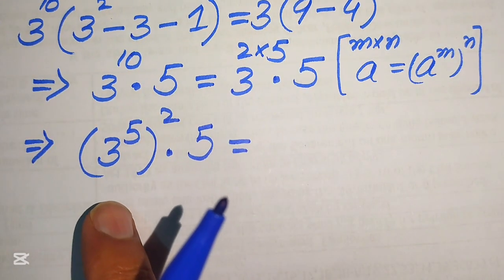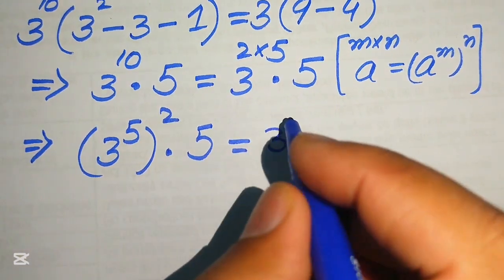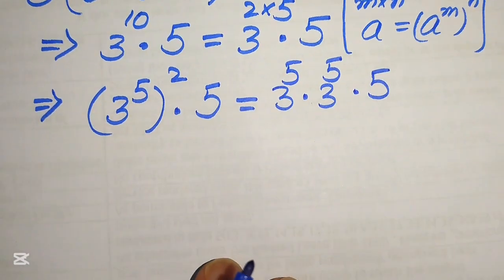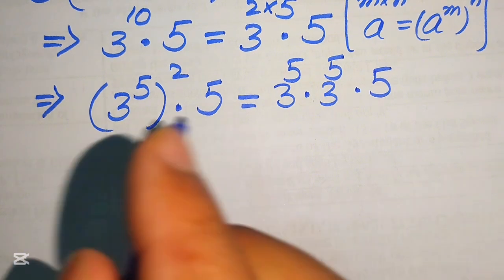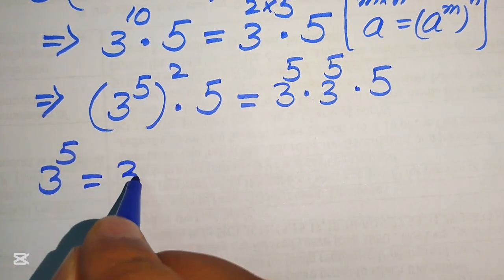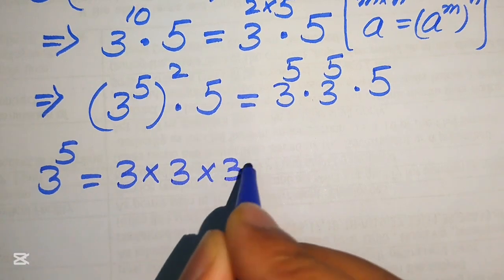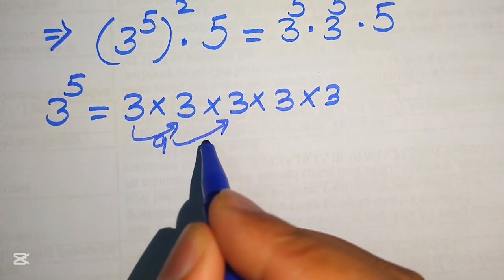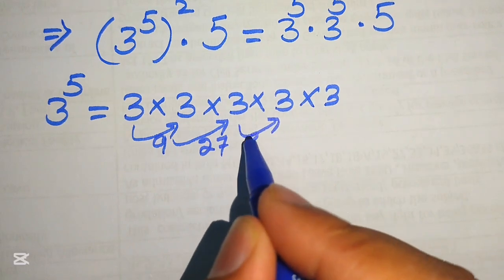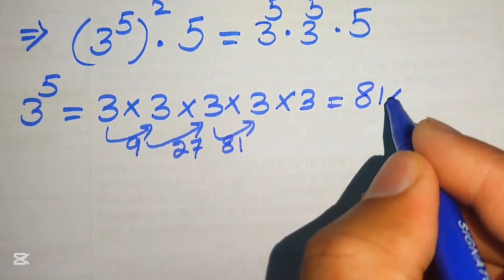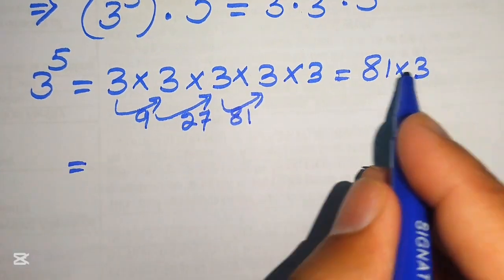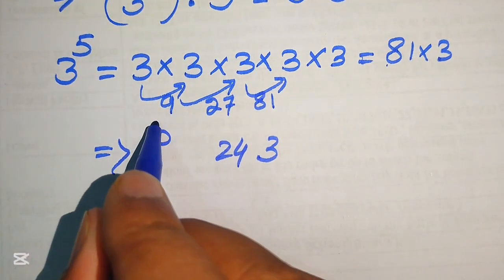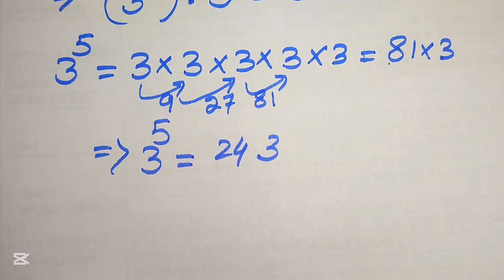The meaning of 3 to the power of 5 squared is that we multiply 3 to the power of 5 by itself, and then multiply by 5. Our next target is to find the value of 3 to the power of 5. Multiplying 3 five times: 3 times 3 is 9, times 3 is 27, times 3 is 81, and 81 times 3 gives us 243. So 3 to the power of 5 equals 243.